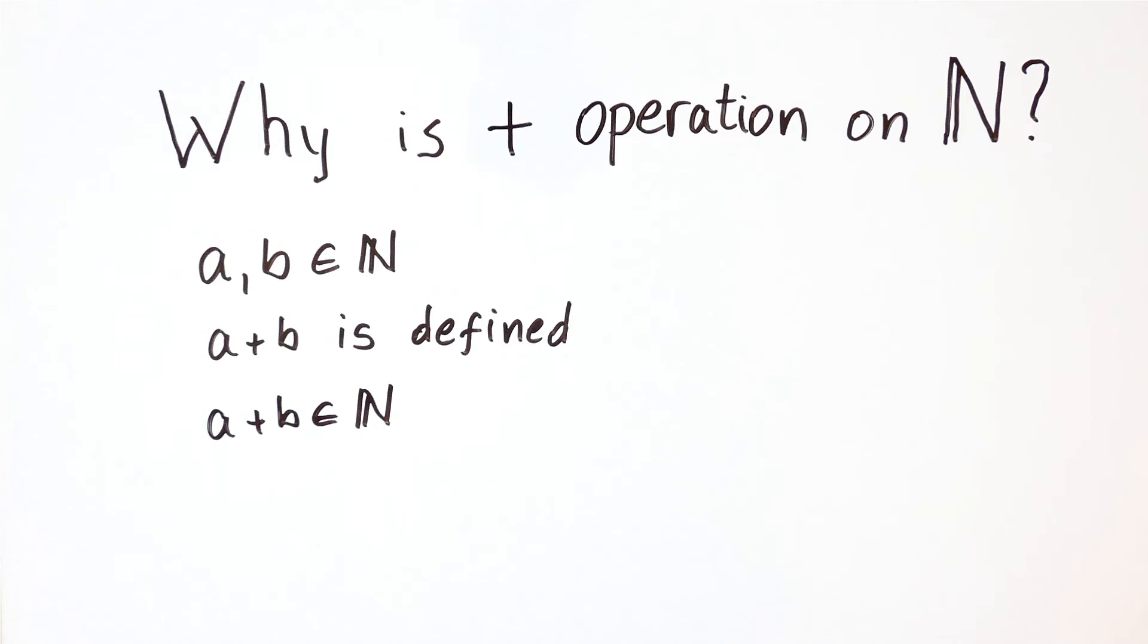First, we saw that addition is an operation on the set of natural numbers because the sum is always defined and itself is a natural number. With subtraction, that is not the case, and therefore, subtraction isn't an operation on the set of natural numbers.